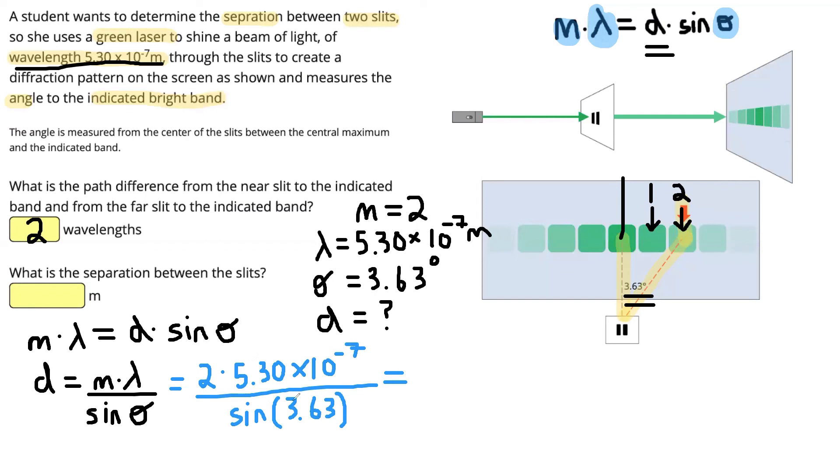So to solve to find the separation between the slits, we're going to put that into our calculator. Just be careful with the fact that sine needs to be in degrees since our angle is in degrees. So check your calculator, make sure you're in degrees, and then go ahead, pop this in. And that should give us an answer of 1.67 times 10 to the power of negative 5 meters. That's our separation between our slits. So we can put that in our box here.